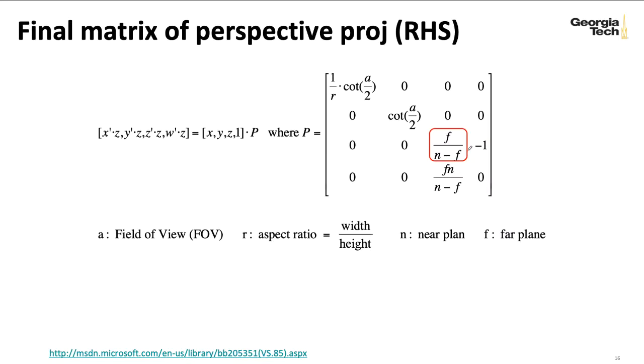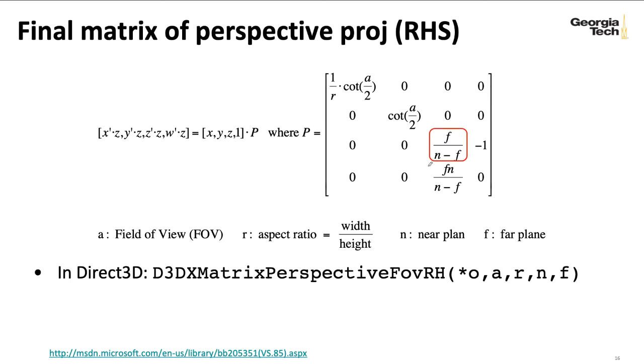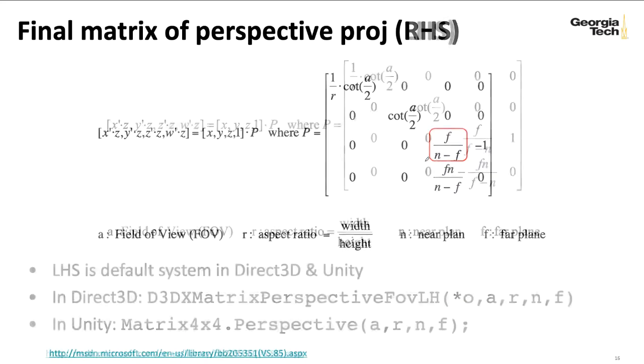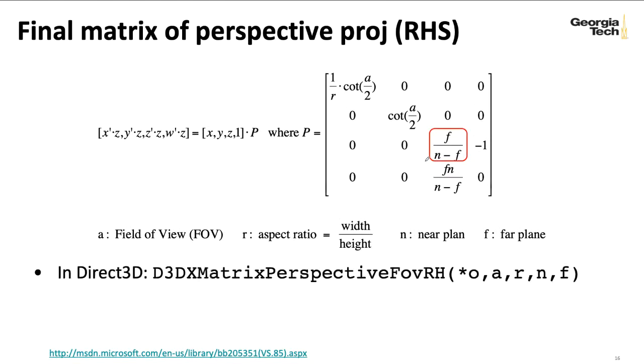But even though the far plane and near plane and a right-handed system should be defined with negative coordinates, all of the APIs assume that you are passing in positive numbers. So that's why you see the n minus f here looking different than you see in the f minus n here on the previous slide. It's just doing that negation for you. So that's built in Direct3D.